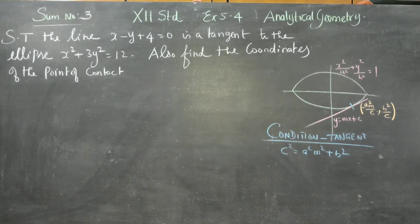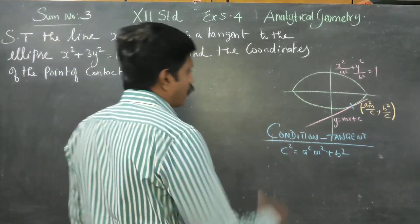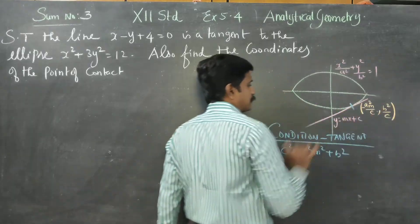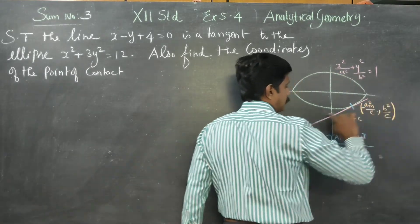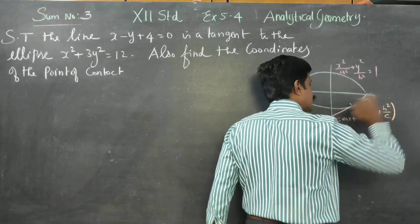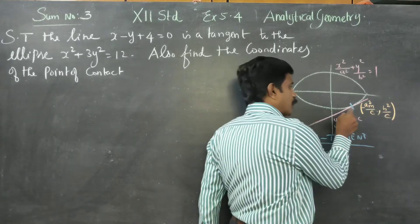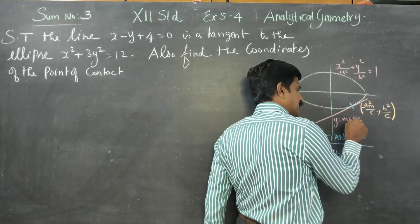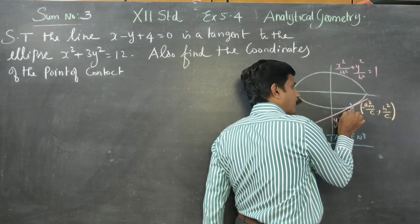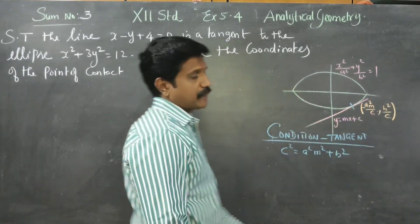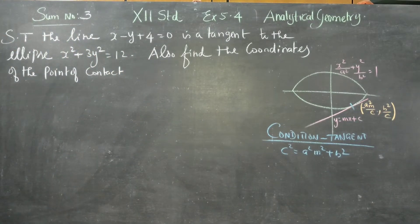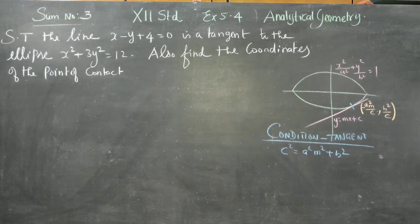Before entering into the sum, you must know some basic rules, principles, or formulas about an ellipse and a tangent. The ellipse standard formula: if there is a line y = mx + c which is a tangent to the ellipse, then the point of contact formula is (-a²m/c, b²/c). The condition for a tangent is c² = a²m² + b².